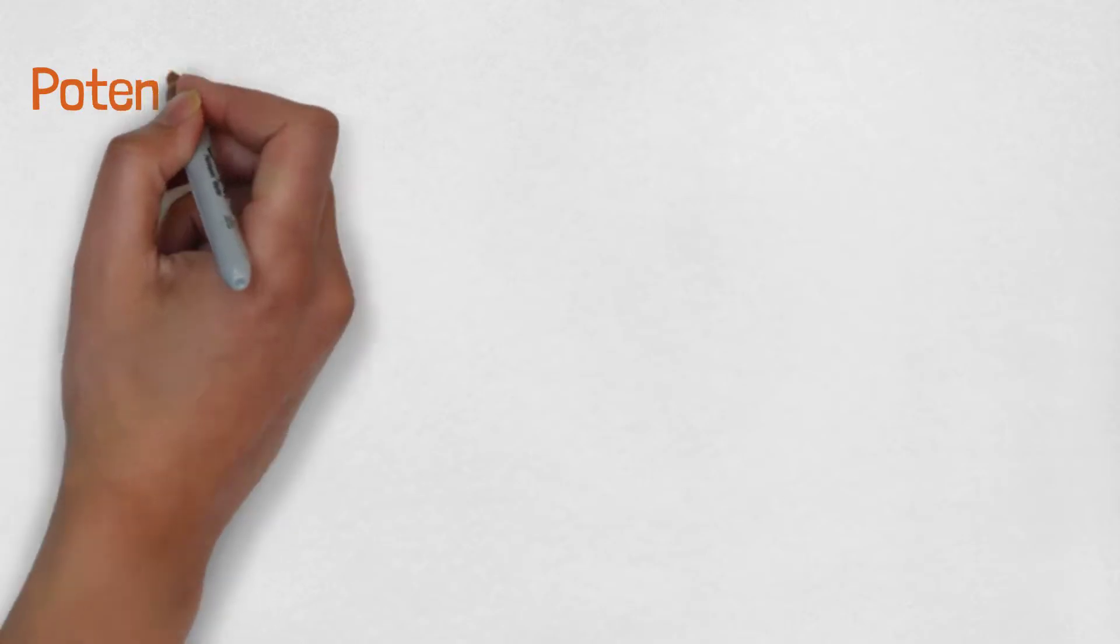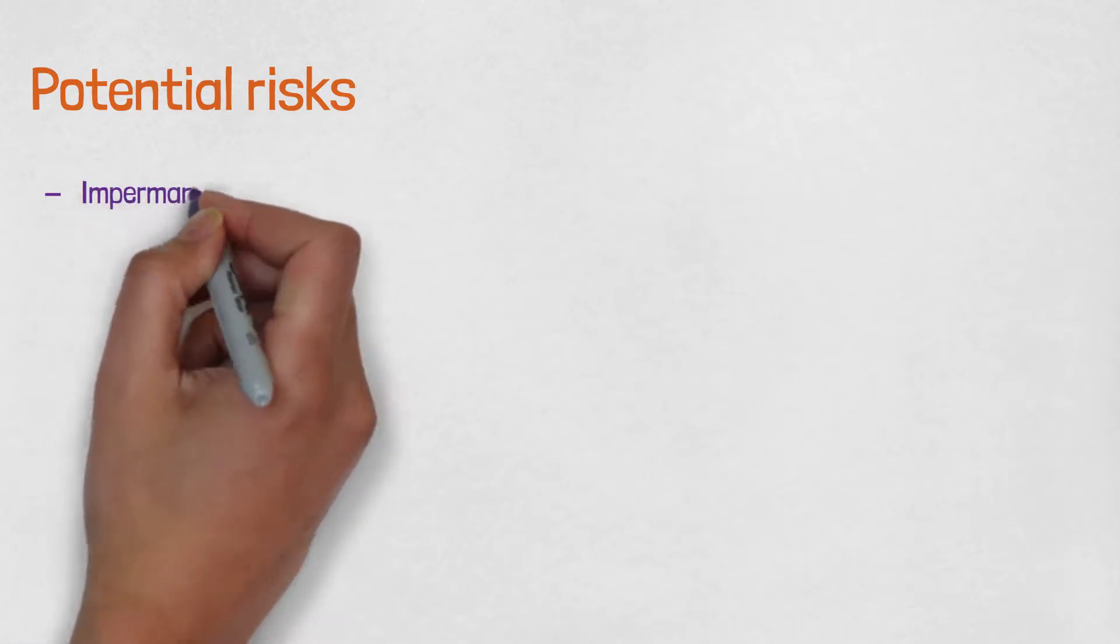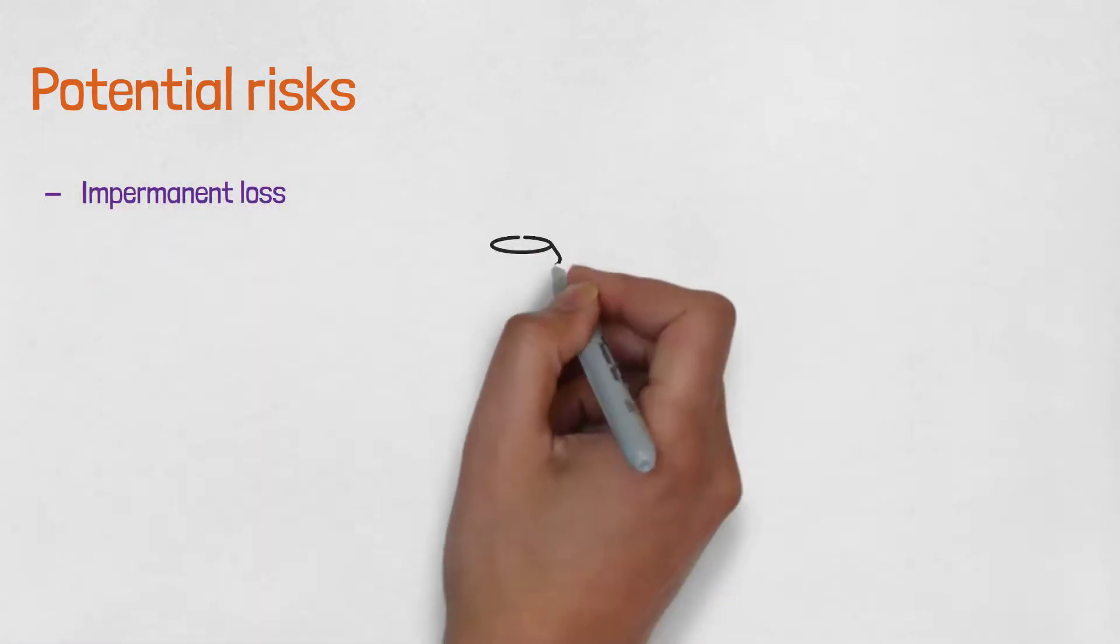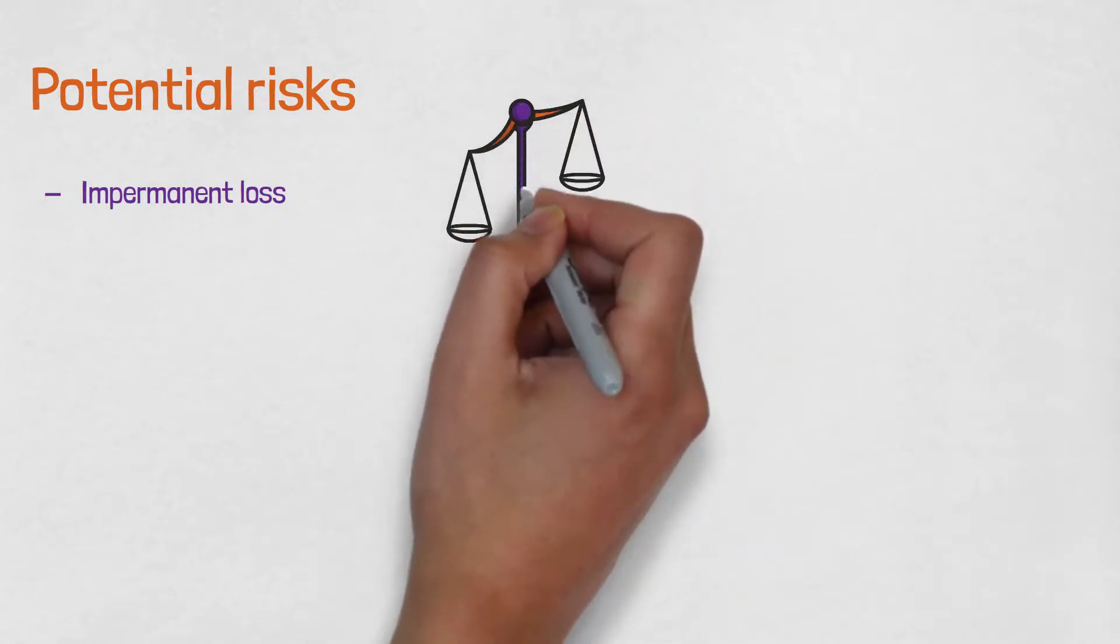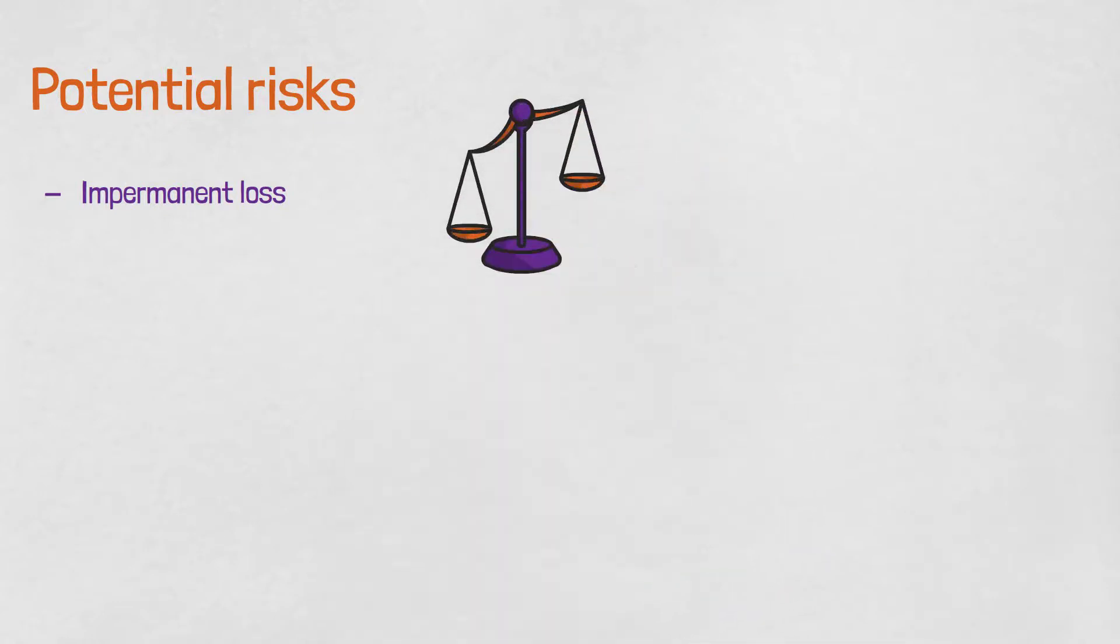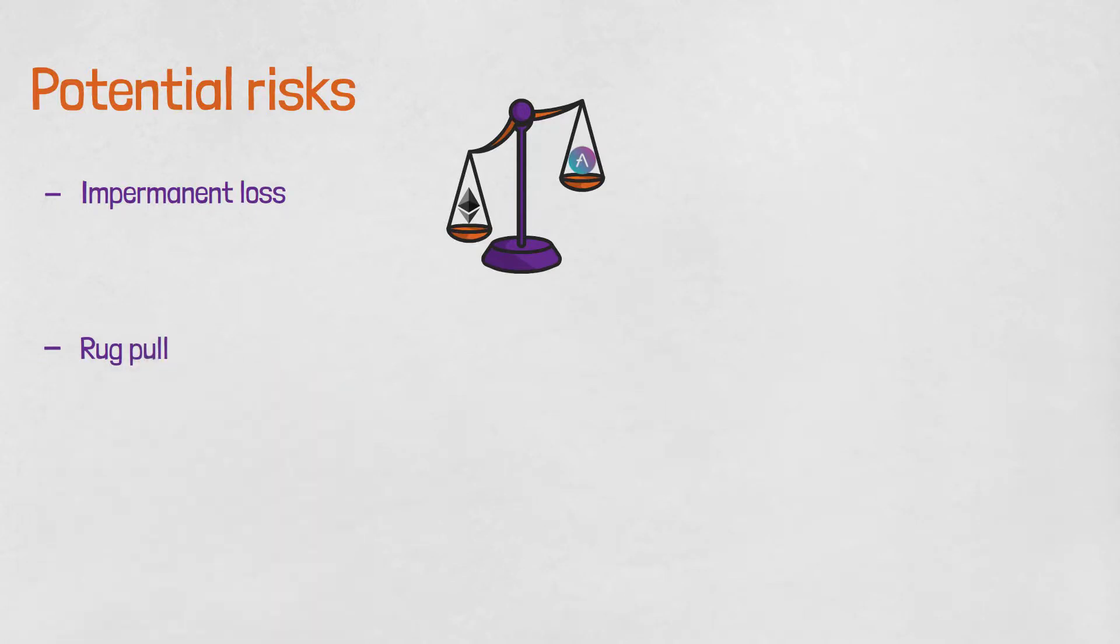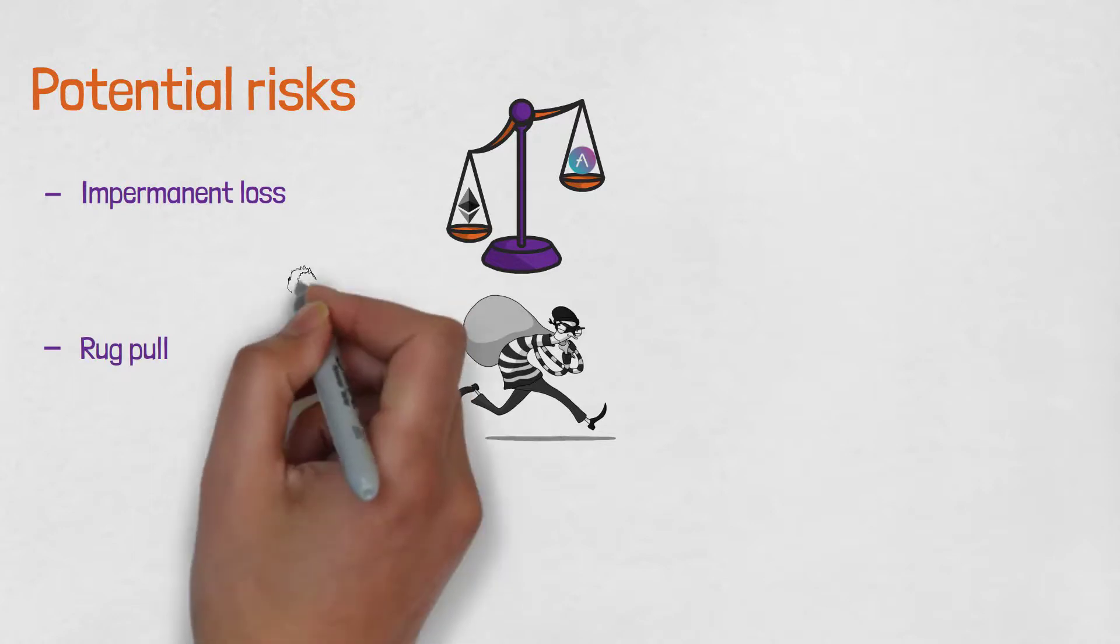Those three methods for earning cryptocurrencies unfortunately don't come without risks. The most common risk with liquidity providing is impermanent loss. Impermanent loss happens when one of the trading pairs increase or decrease in price. Because of this imbalance in a liquidity pool, one of the pair is sold for less price and that results in missed gains. Another thing to consider is rug pull, which describes a scam project in which developers take investors' money and leave them with empty pockets.